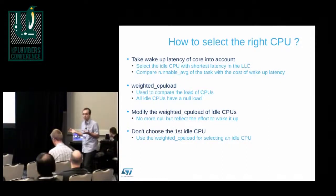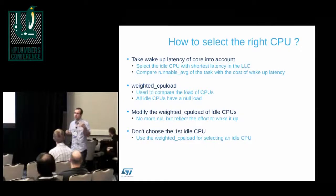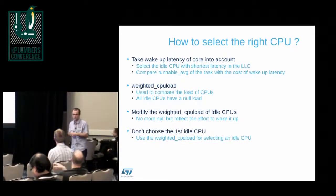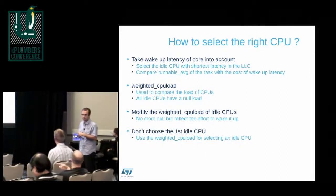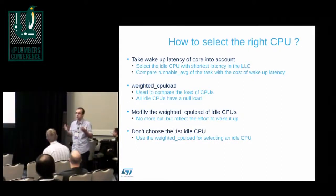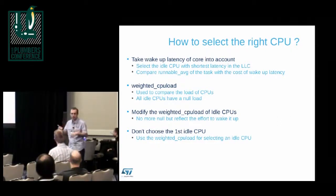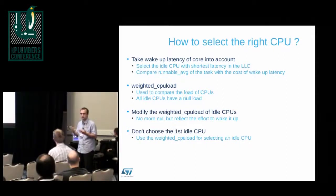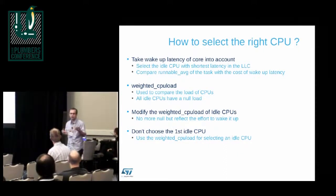We also tried using the block load. The main issue with block load is that it gives a view of how many tasks will probably run in the near future. But there can be a huge difference between the block load and the real idle state of the CPU — the two values can be at the opposite: there is no direct relationship between the C-state a CPU can reach and the block load.